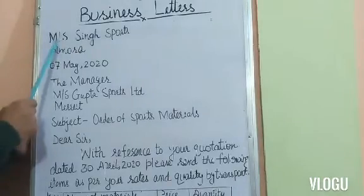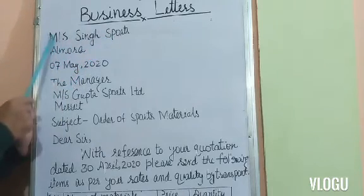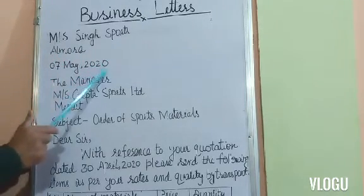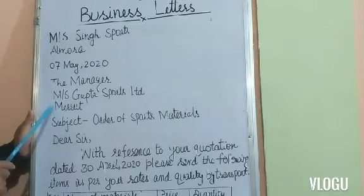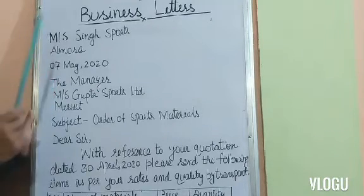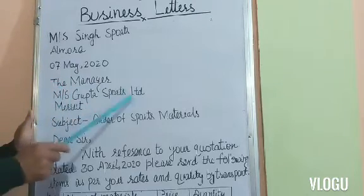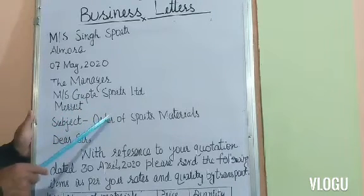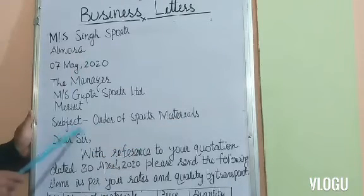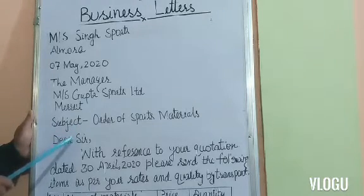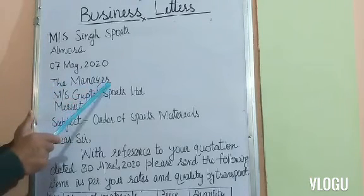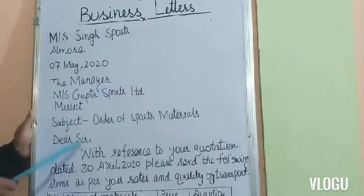So here is the answer. First, write the sender's address: MS Singh Sports, Almora. Then leave a line and the date will come. Once again leave a line, and then the receiver's address: The Manager, MS Gupta Sports Ltd., Murad. Then leave a space and the subject will come — subject is 'Order of Sports Materials.' Then leave a space and the salutation will come. Since we are writing to an individual, we will write 'Dear Sir.'